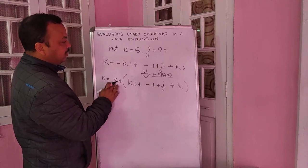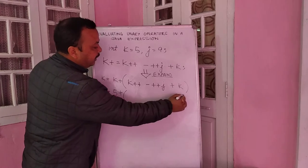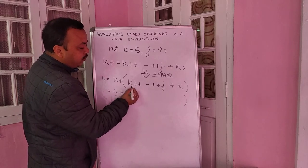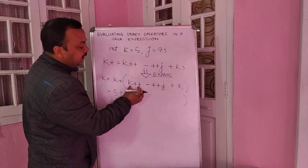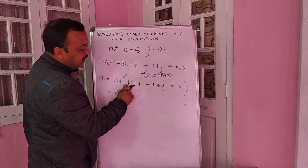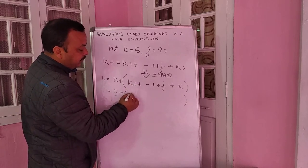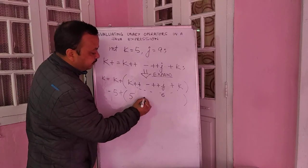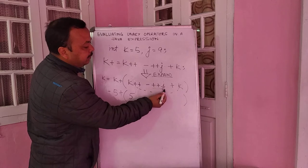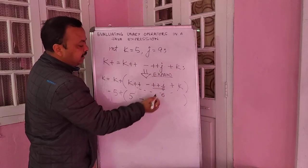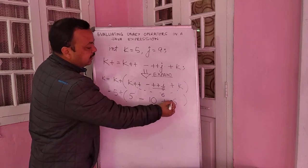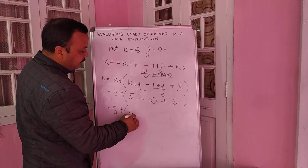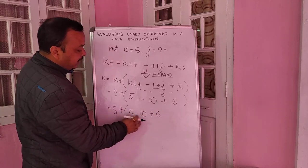The starting value of k is 5. We write 5 plus, then within parentheses: k-plus-plus means use the current value of k, so we write 5, but before reaching the next expression k has become 6. Then plus-plus-j is a pre-increment, so j goes from 9 to 10. The last k uses the latest value, which is 6. So we have 5 plus (5 minus 10 plus 6).